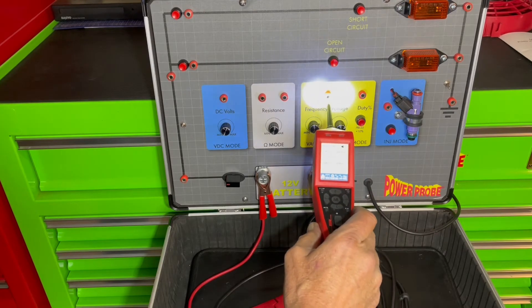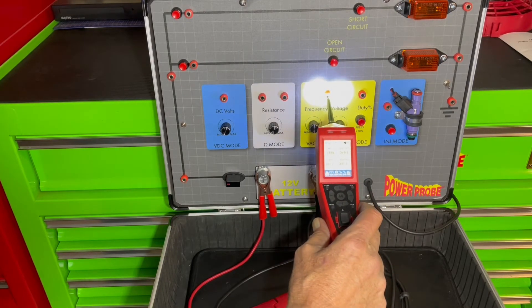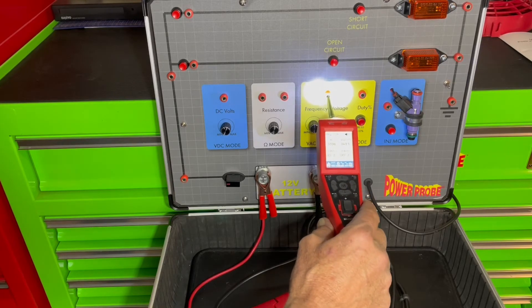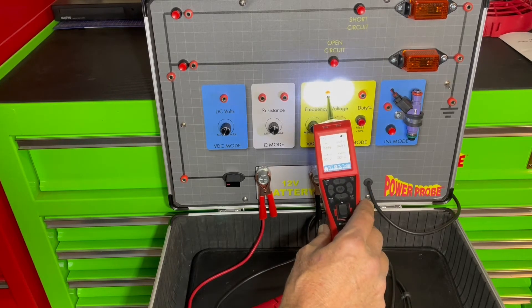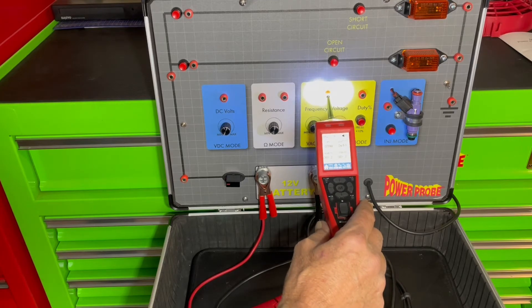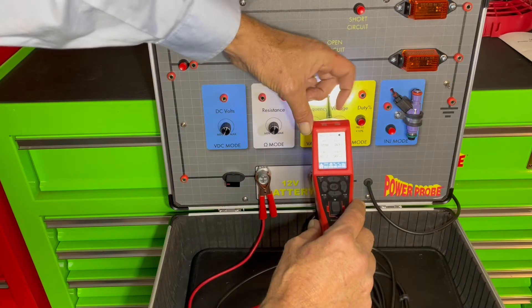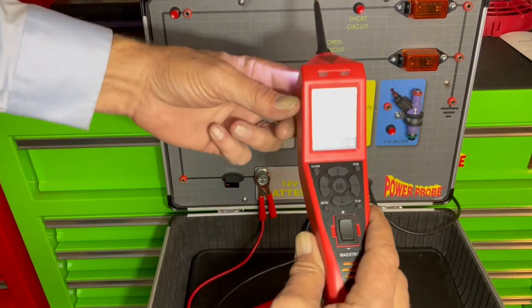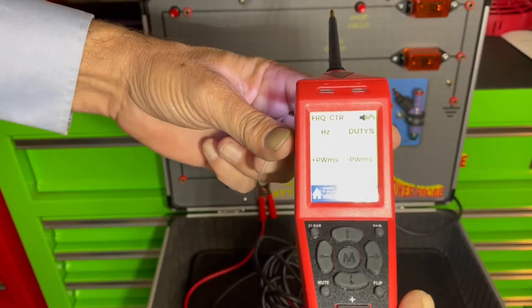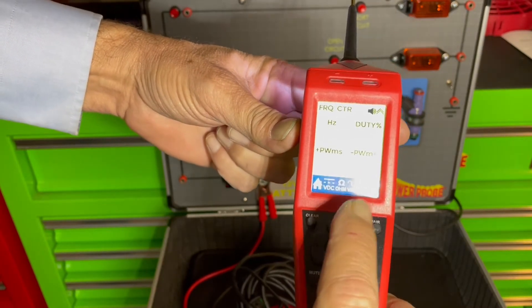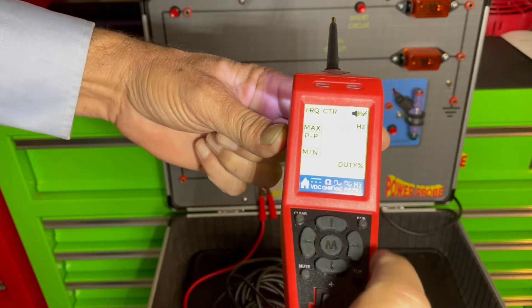Or we can go to peak to peak voltage and it displays numbers very similar to what you saw in the Power Probe 4. What's unique now is if you see an arrow in the upper left hand corner of the display, that means by pressing the up arrow you will switch to what's called trace mode.